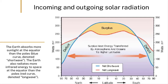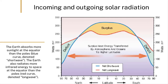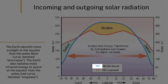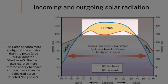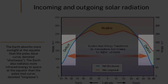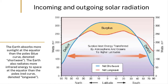This latitudinal distribution is just like the incoming solar radiation; however, if you compare the incoming and outgoing distributions you'll find that there is more incoming than outgoing at the equator, and there is more outgoing than incoming at the poles. This means there is a net heat gain at the equator and a net heat loss at the poles.